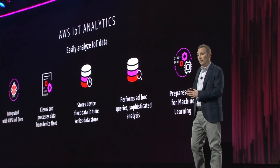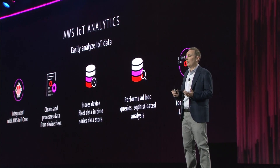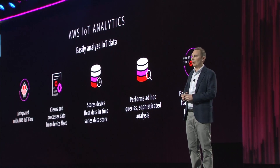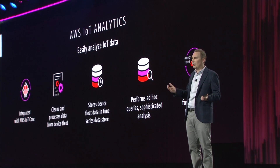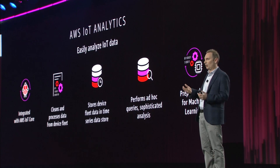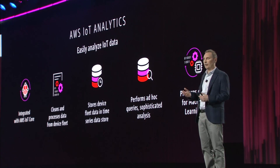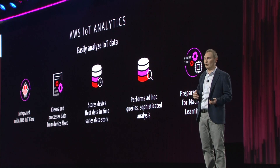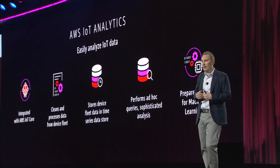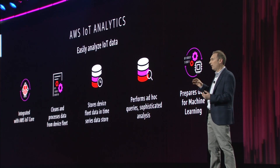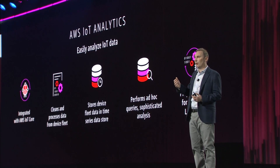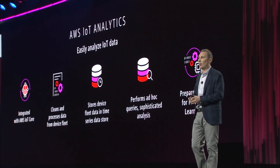AWS IoT Analytics is fully integrated with AWS IoT Core. It's pretty simple to use. You define an analytics channel and select the data that you want to actually store, and then it ingests the data, and you can configure it to enrich or filter or transform the data.